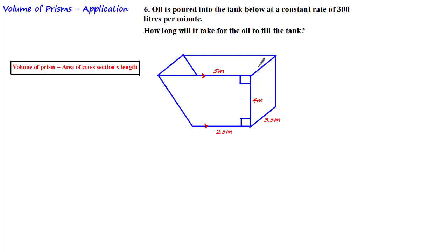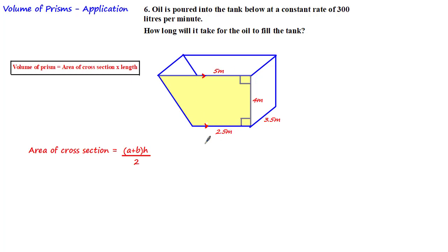Whenever you see a solid being filled with liquid, think about volume — the amount of space occupied by a solid. Looking at the face of this tank, it's a quadrilateral with two unequal parallel sides, meaning it's a trapezium. Therefore the tank is a trapezoidal prism, which we know how to solve. Taking the trapezoidal face as the cross-section, we use the formula (a + b) × h ÷ 2.